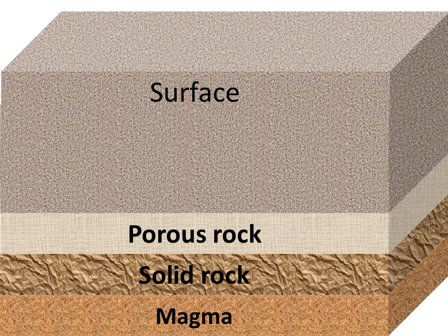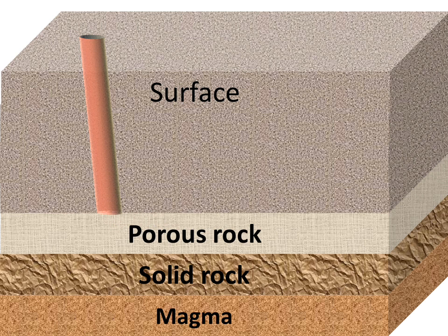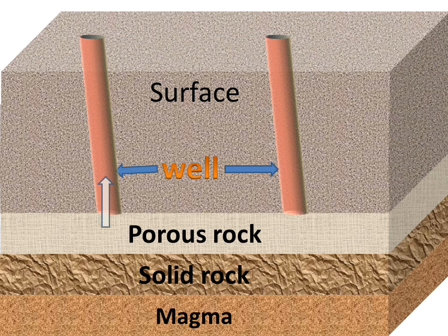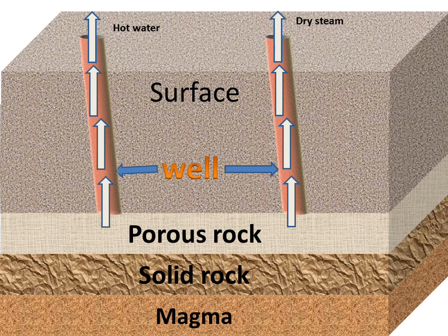By what method can we extract energy from these layers of the earth? Firstly, a hole or a well is drilled in the surface of the earth down to the porous rock. Then also a well is drilled on the other side to the porous rock. From these wells, steam or hot water will be liberated, and from this hot water or steam we can extract energy to further produce electrical energy.